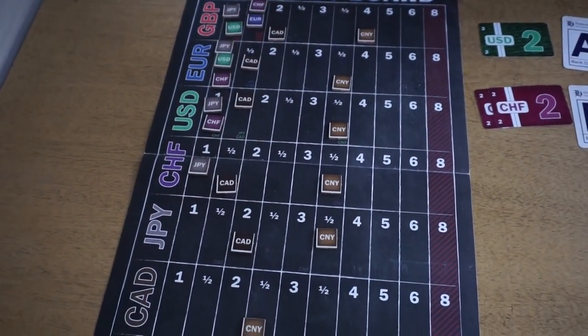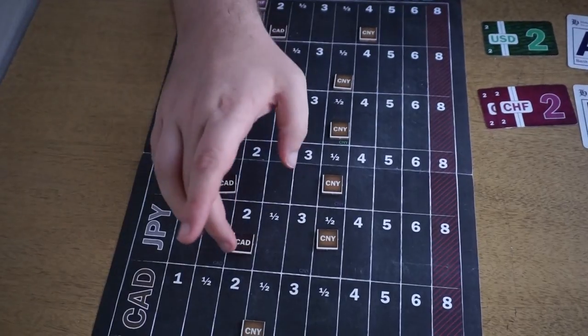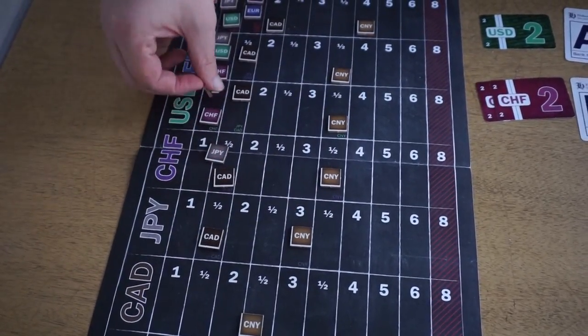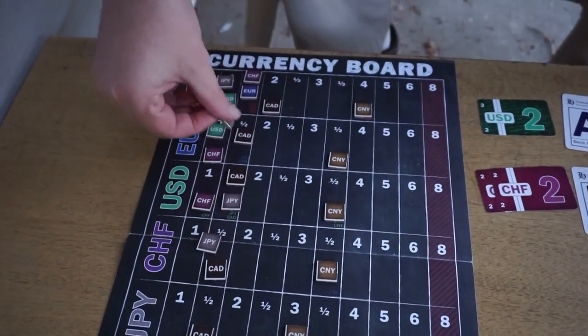Conversely, when a currency is weakened, you can see movement in the other direction. So these would move to the left and these to the right if the JPY was weakened.